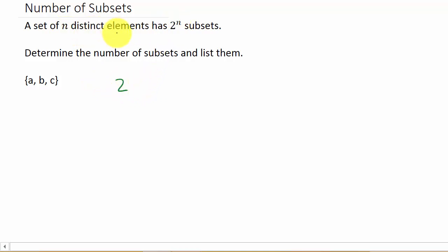N represents the number of elements in the set. Well, there's 1, 2, 3 elements. So 2 cubed, and that would be 8. So this set here has 8 subsets. And so now let's list them. The first one is going to be the empty set, because remember, the empty set is a subset of any set.